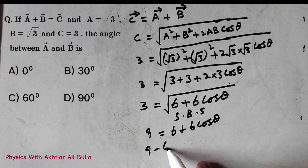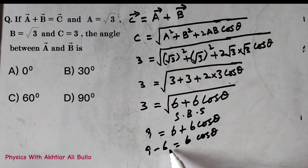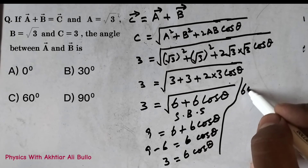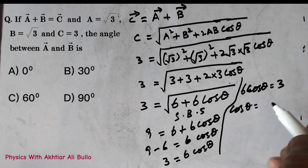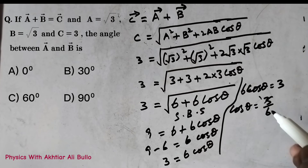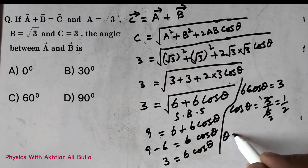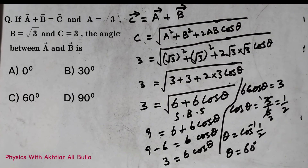So 9 minus 6 equals 6cosθ, meaning 3 equals 6cosθ. Therefore cosθ equals 3/6, which simplifies to 1/2. We find θ = cos⁻¹(1/2), and the value of cos⁻¹(1/2) is 60°. So the correct option is (c) 60°.